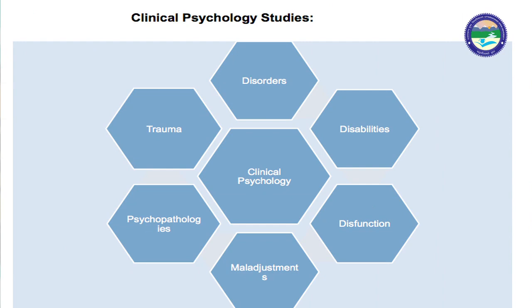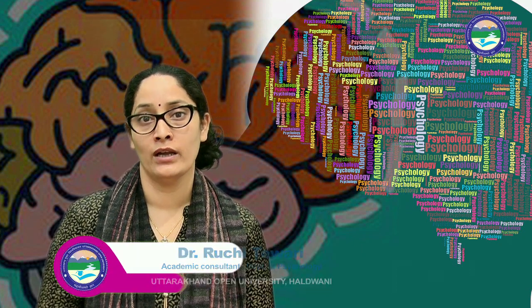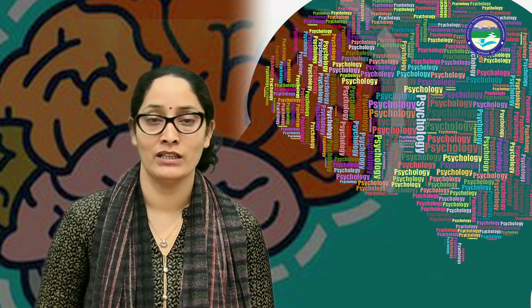Clinical psychology, disorders, disabilities, dysfunctioning, maladjustment, psychopathology और trauma इन सब चीज़ों की study करता है। Trauma मतलब एक आघात — जैसे कि कोई बच्चा class में fail हो जाए, यह उसके लिए एक बड़ा trauma है। इसी तरह breakup या किसी प्रियजन की हानि भी trauma हो सकता है। इन सब चीज़ों के बाद client की mental condition को जाना जाता है और उसे treat किया जाता है — यह सब clinical psychology में होता है।